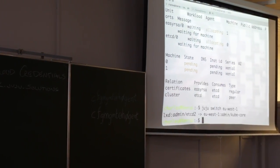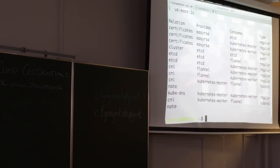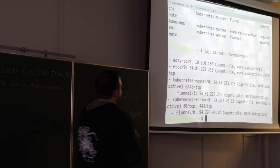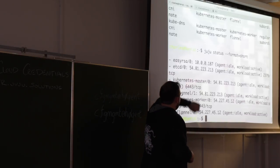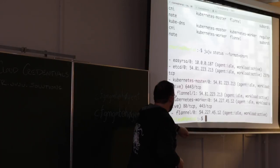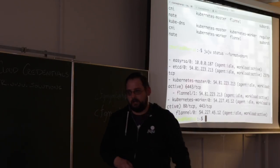If I switch into this Amazon instance and run juju status with format equals short, this is a super condensed version of the Juju status. I've run a deployment of Kubernetes. We can see that we have etcd and EasyRSA deployed, a Kubernetes master unit, worker unit, and two Flannels attached providing the overlay network.